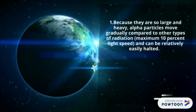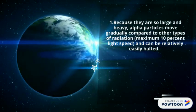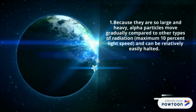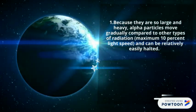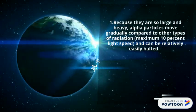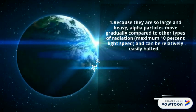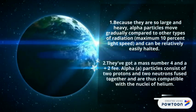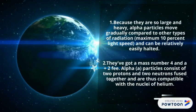Because they are so large and heavy, alpha particles move gradually compared to other types of radiation — at maximum 10% of light speed — and can be relatively easily halted. Alpha particles consist of two protons and two neutrons bound together, and are thus comparable to the nucleus of a helium atom.